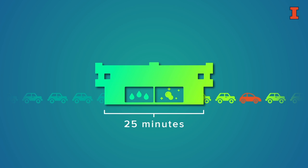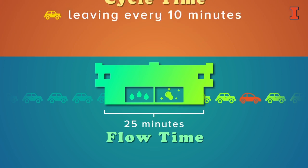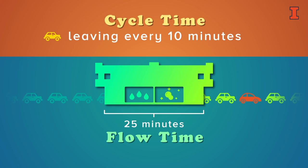This 25 minutes we will call the flow time or the throughput time. Notice that the throughput time of 25 minutes is different from our cycle time of 10 minutes. So even though a car is coming out every 10 minutes, a specific car going into the car wash will take 25 minutes to come out.